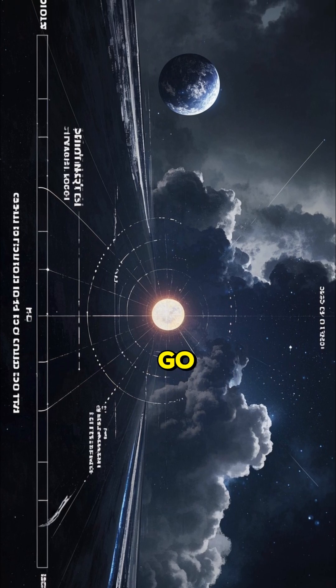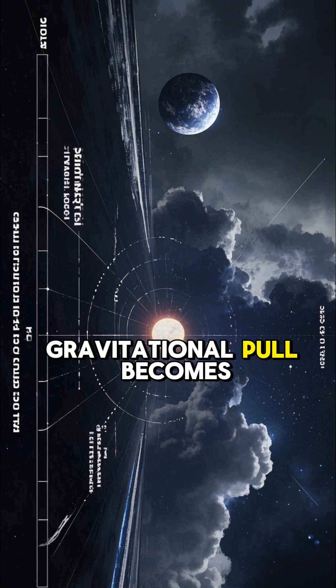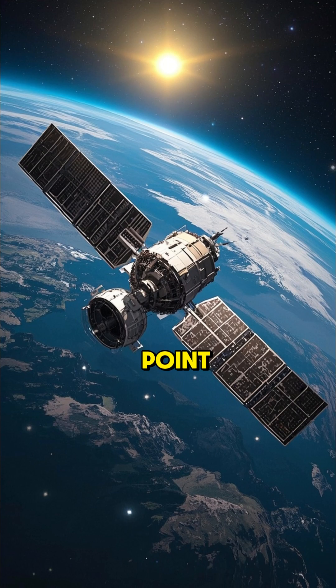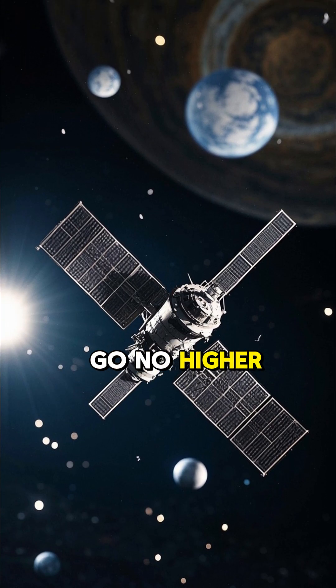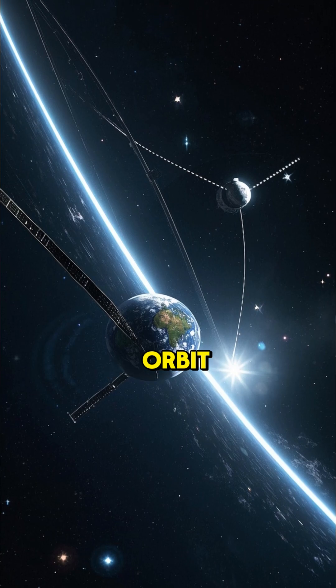The further away from Earth you go, the weaker the gravitational pull becomes. And at some point, you'll reach a balance between gravity and speed, where you can go no higher. This is what we call an orbit.